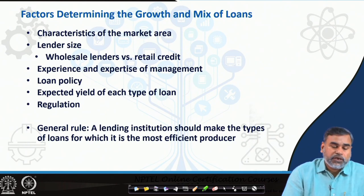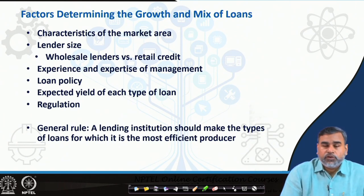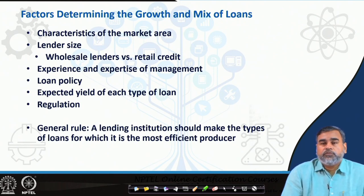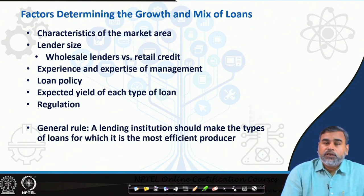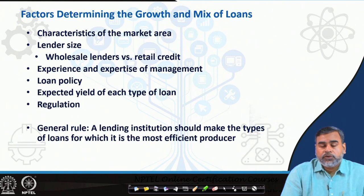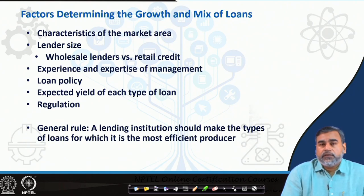Number two is lender size. Whatever banks are available in a particular region — whether the particular bank is a wholesale lender, a big bank, or a small bank that can only provide loans of a particular limit, say retail loans only — they may not be eligible to provide loans to bigger commercial establishments or corporates for their investments. So depending upon the lender size, the type of loans also differs. That is why we can categorize them as wholesale lenders and retail lenders.